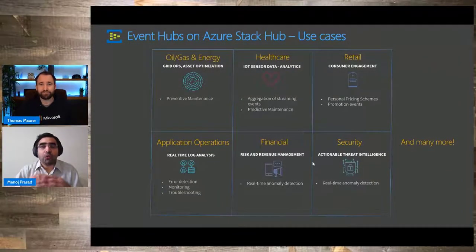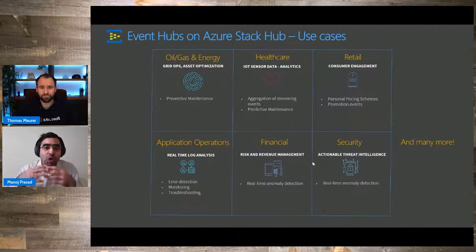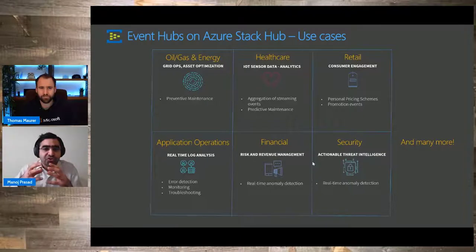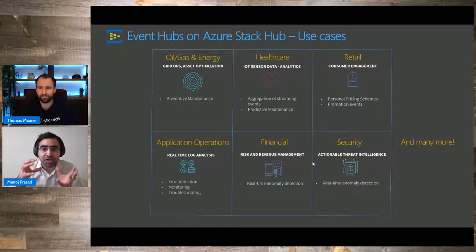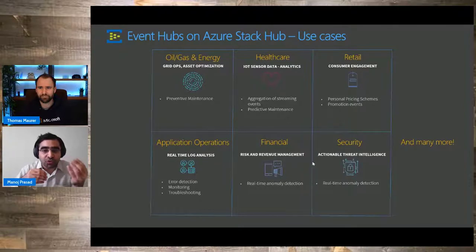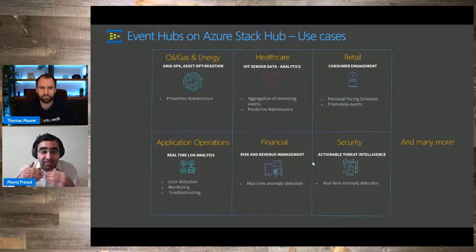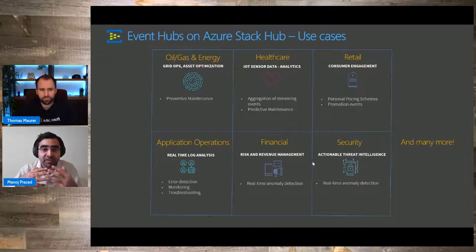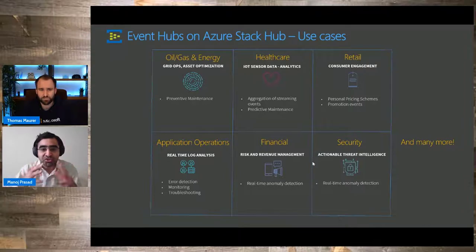The first use case — think about the oil and gas industry with smart grids. Think about those smart grids trying to stream data, and you can use that data to understand if any of those grids need maintenance. You can get some insights, predict or prevent bad things happening on those grids. Maintenance use cases — you can pretty much stream that data through Event Hubs on Azure Stack Hub.